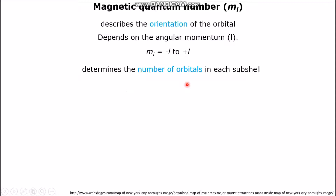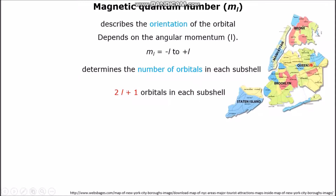Earlier, I told you that you can imagine New York as a shell subdivided into boroughs, which can represent individual sub-shells. The boroughs of New York can be divided into neighborhoods. For example, Queens is divided into smaller neighborhoods like Jamaica, Woodside, Flushing, Astoria, etc. Think of these small neighborhoods as the individual orbitals.